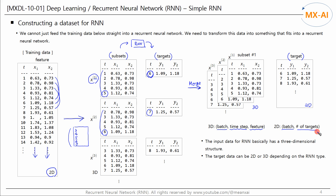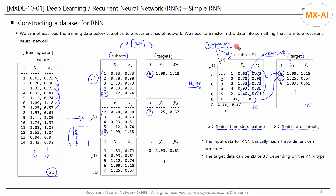When the first subset is fed into the RNN, we want it to output the first row of the target, and when the second subset is input, the second row of the target is output. A series of data points within a subset are dependent on each other, so we cannot randomly sample or shuffle these sequential data points — the dependency relationship would be broken. However, the subsets are independent of each other, so we can randomly sample or shuffle the subsets.